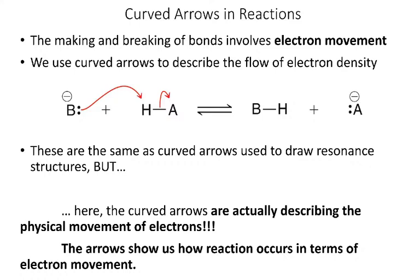The new thing we're going to do with Bronsted-Lowry acids and bases is draw mechanisms to show how the electrons are moving in the reaction. We can think of these acid-base reactions as the base — which always has a lone pair — stealing the H+ from the acid. This lone pair steals the hydrogen, and then the bond that was between the hydrogen and A becomes a lone pair on the conjugate base.